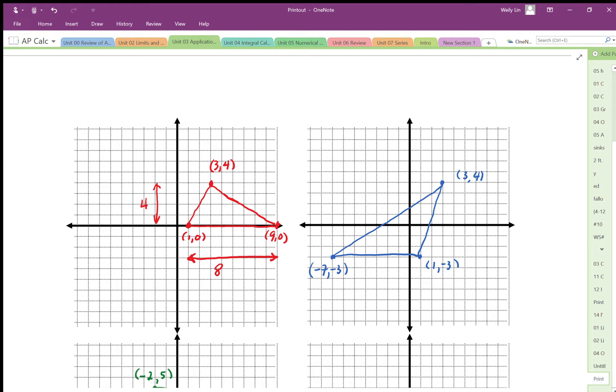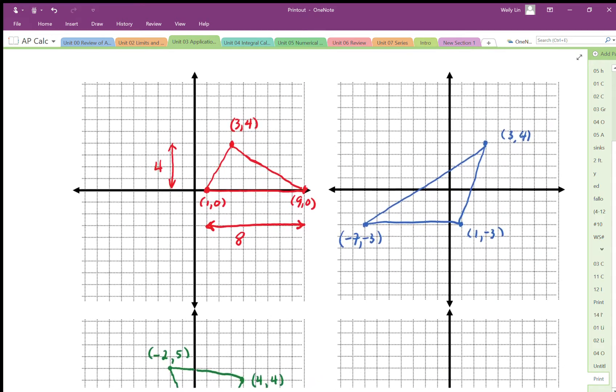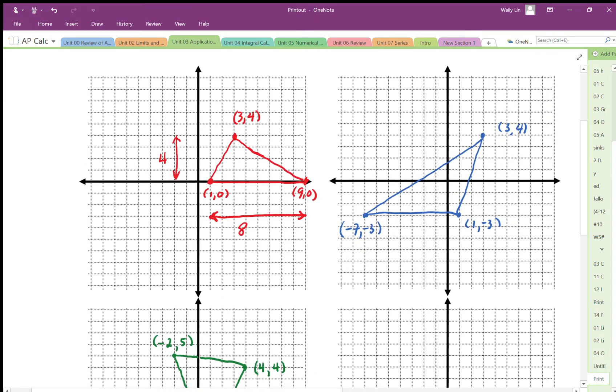So we can find the area of a triangle on a coordinate grid fairly easily using a strategy here. This is a matrix method or a vector method, but I'm just going to show you how to use it, but not necessarily how it works.